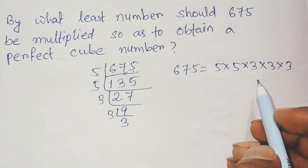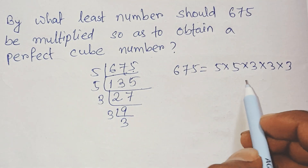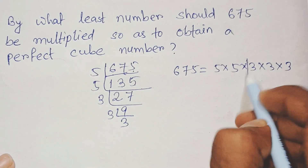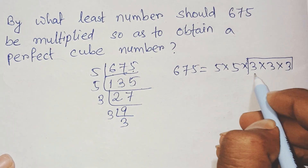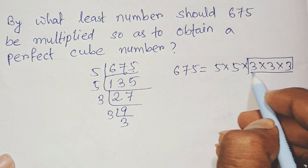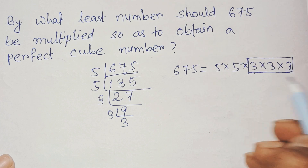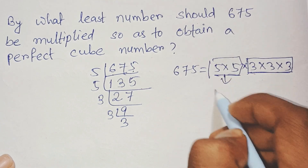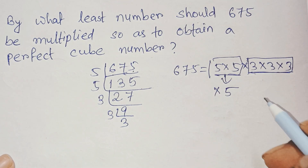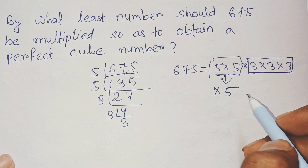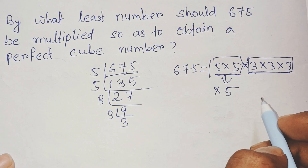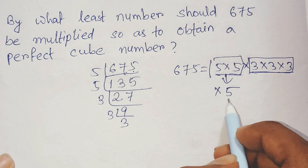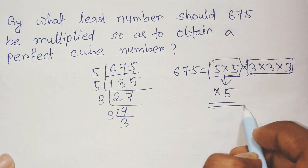We have to make the factors as a set of 3 so that it should be a perfect cube. There are three 3's but there are only two 5's. So, we have to multiply it by 5 so that it will be a perfect cube.